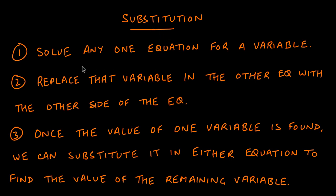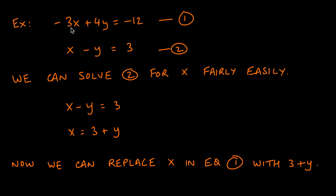Substitution has a few steps and is more straightforward than it seems. Step 1: solve any one equation for any one variable of your choice. Step 2: replace that variable in the other equation with the expression you found. Step 3: once you have one variable's value, substitute it into either equation to find the other. Let's apply this to our system and see if our graphical estimate was close.